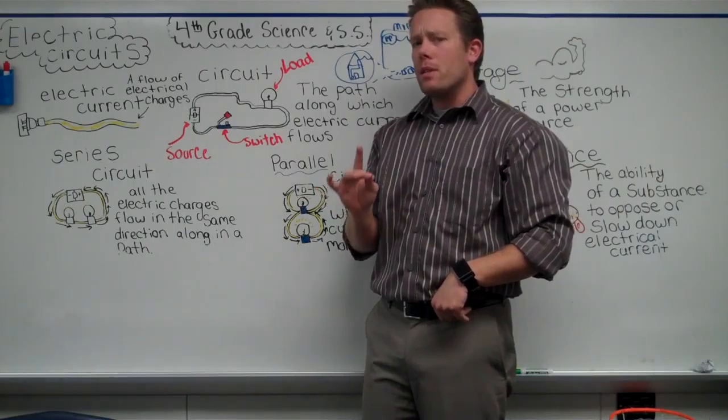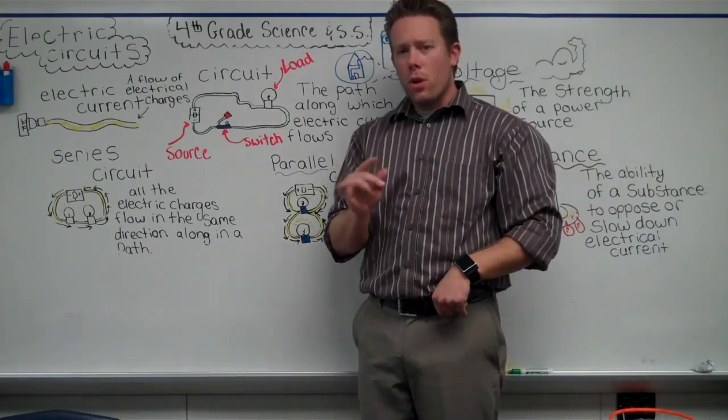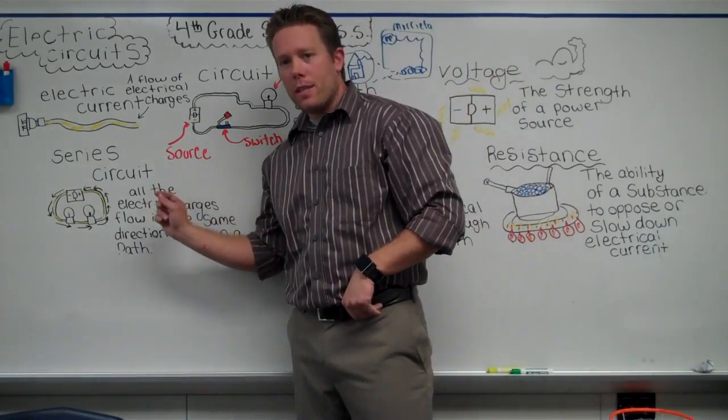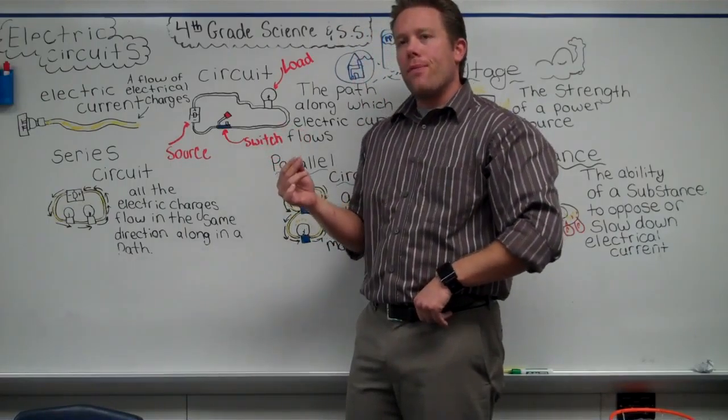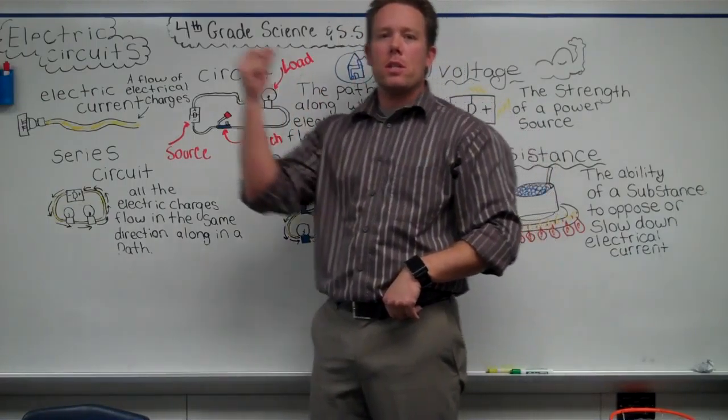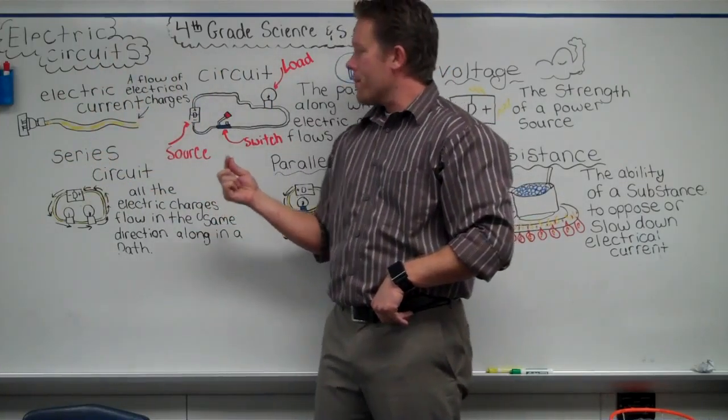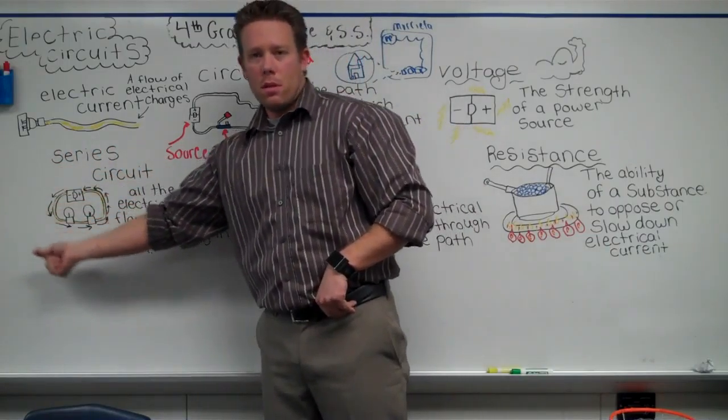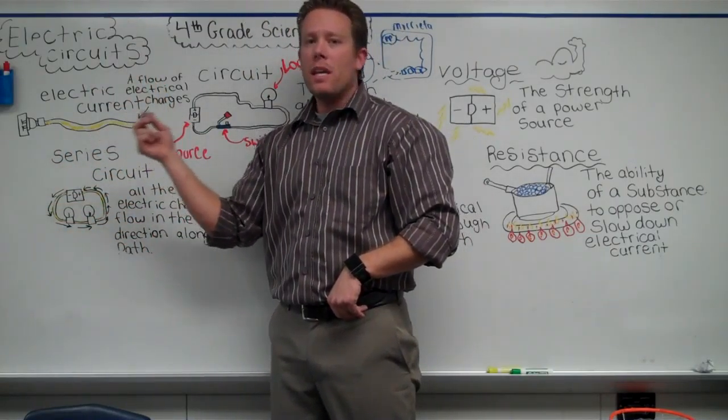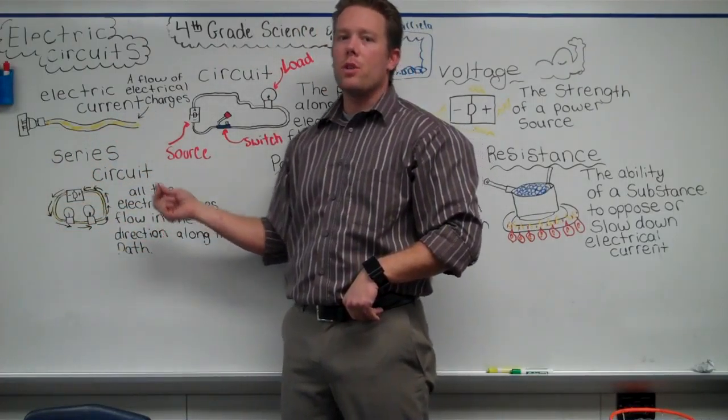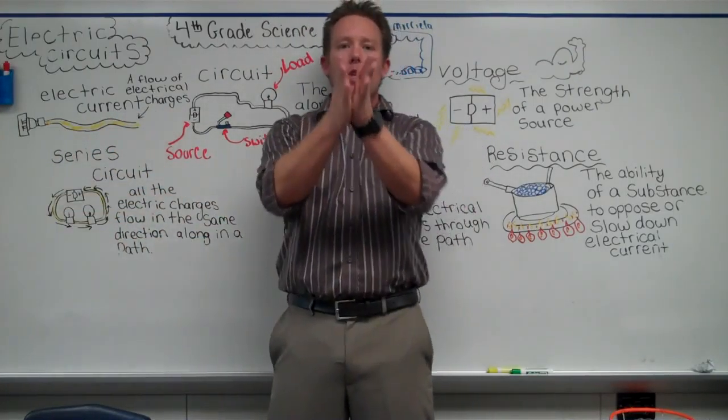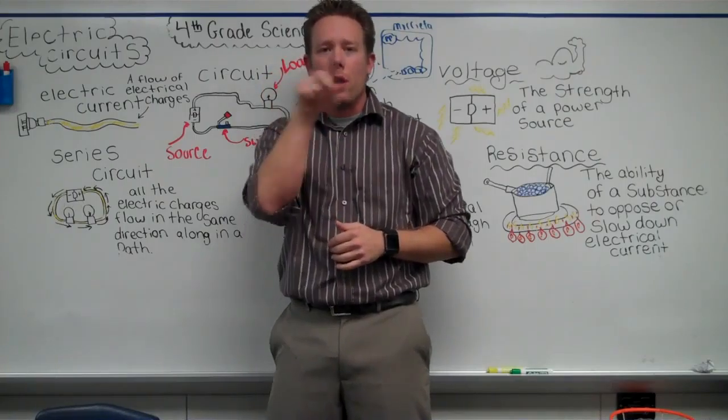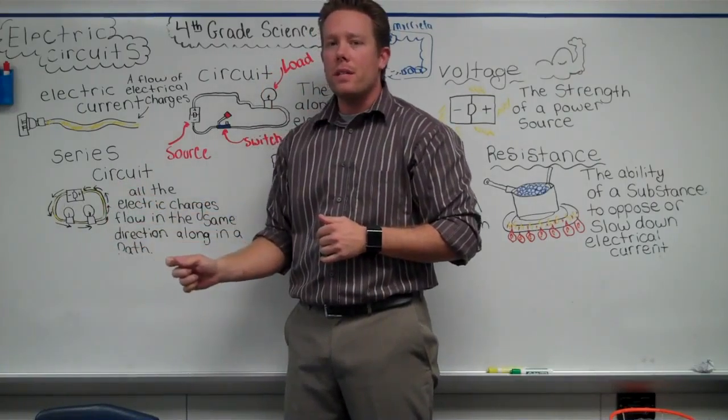Now there's a couple different kinds of circuits. You have the series circuit. The best way that I can help you to think about that is just a circle racetrack. All the cars go in the exact same direction. There is no changing paths. It's just a circle. There's no splitting routes. It's not like I could go right or left. That's called a series circuit.